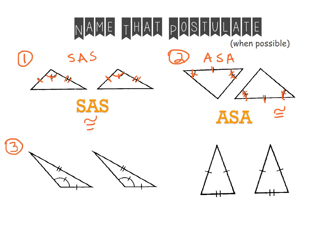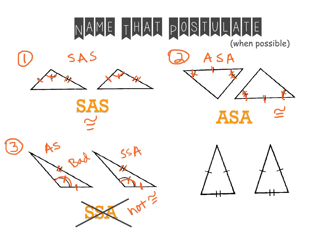Now for our third example, the first thing I see is a congruent angle, so I have A. The next thing I would see would be a side, and the last thing I see is another side. So if I were to write in that last S, we'd get a bad word. That automatically should tell me these triangles are not congruent — because if I finished it out or wrote it the other way around, it'd be SSA.